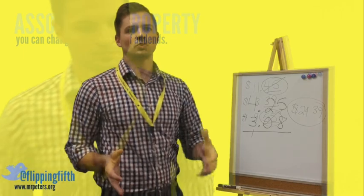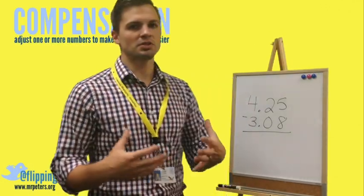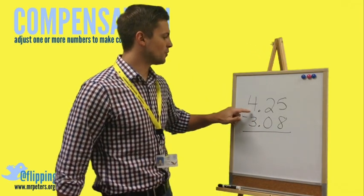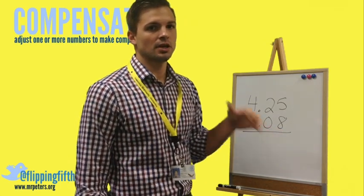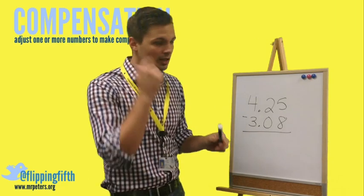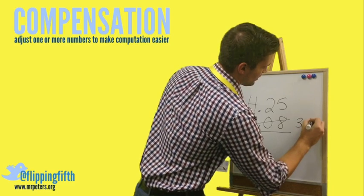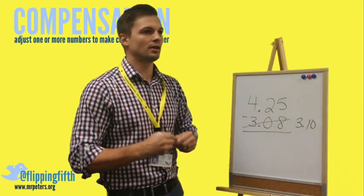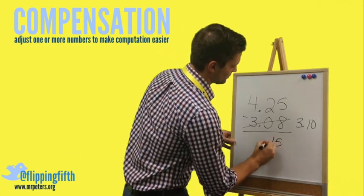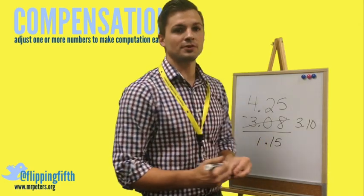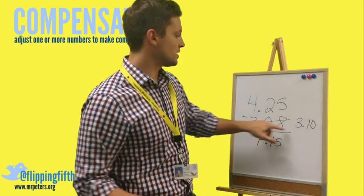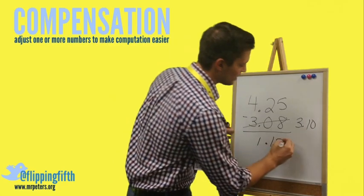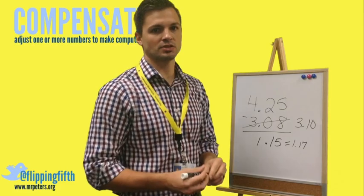The last tool is called compensation. Compensation is when you adjust one number to make it easier to work with, then correct for that adjustment at the end. For example: 4.25 minus 3.08. That can be tricky, so we round 3.08 up to 3.10, because 10 is easy to subtract from 25. So 25 minus 10 is 15, and 4 minus 3 is 1, giving us 1.15. But we compensated by adding 2 hundredths to 3.08, so we need to add 2 hundredths back — giving us 1.17. Make sure you're adding hundredths, not tenths or whole numbers.